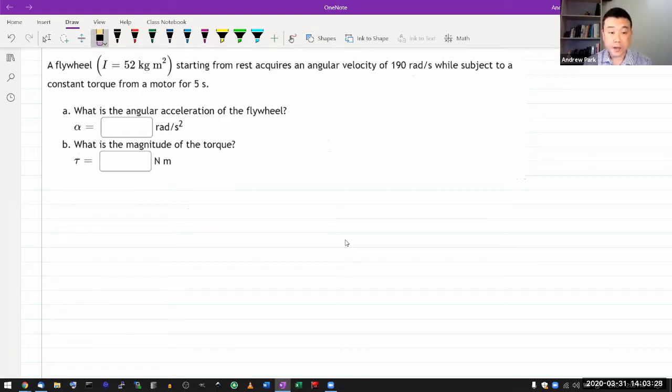It says flywheel of given some rotational inertia. That's great. We have a numerical value, so I'll just use this symbol here. And by the way, I'm not gonna be plugging in any numbers in the interest of time. Okay, so starting from rest acquires an angular velocity of 190 radians per second.